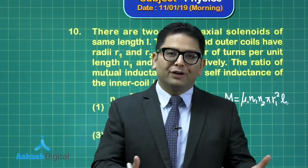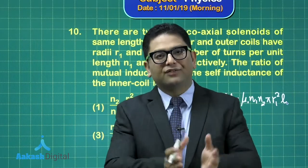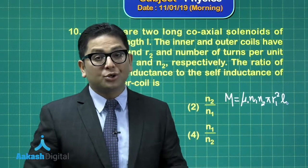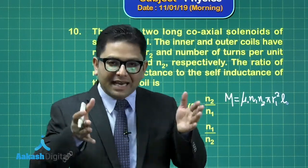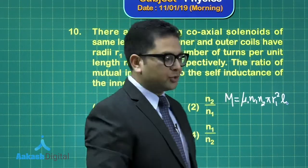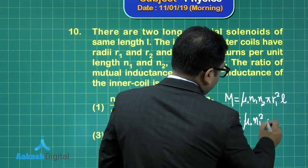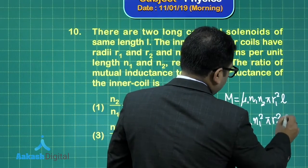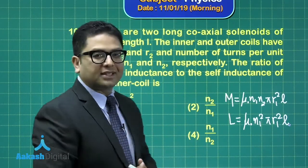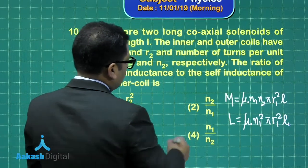It's easier if you consider the outer coil as the primary — pass the current to the outer, calculate the flux in the inner. For the self-inductance of the inner coil, you give the current to that same coil, and it comes out to be μ₀ N1² π R1² L. Dividing mutual inductance by self-inductance, the ratio comes out to be N2 over N1.